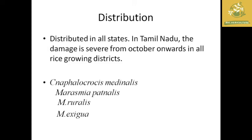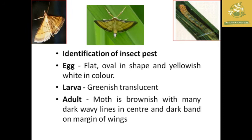Leaf folders are present in all states and in Tamil Nadu, major damage is found from October onwards in all rice-growing districts. Scientific names include Cnaphalocrocis medinalis, Marasmia paternalis, Marasmia ruralis, and Marasmia exigua. For identification: the egg is flat and oval in shape, yellowish-white in color. The larva is greenish-transparent with dark wavy lines in the center, and a dark band on the margin of wings.